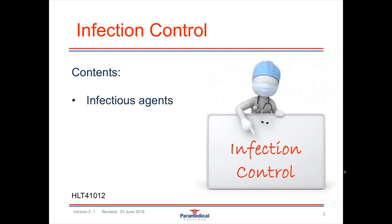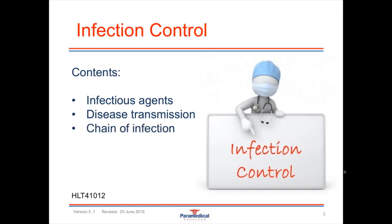Firstly we will talk about the different types of infectious agents that lead to somebody obtaining a disease, and how disease is transmitted from one person to another. This occurs through the chain of infection, and understanding the chain of infection is highly important for the work that we do, especially when it comes to procedures of infection control, because through these procedures this is how we can stop infection spreading.